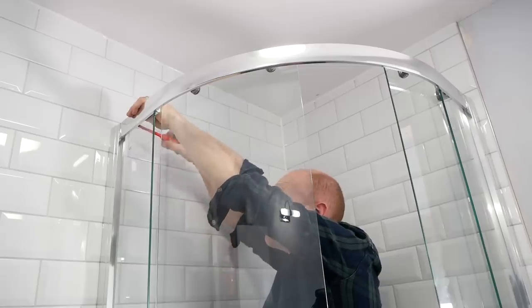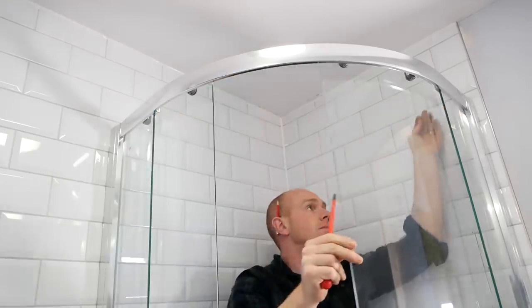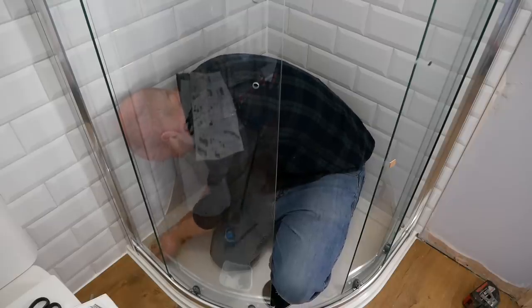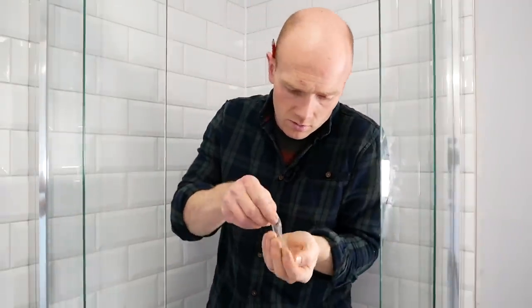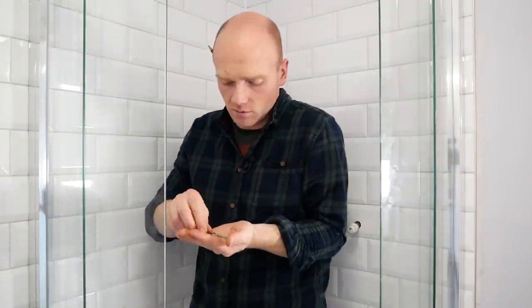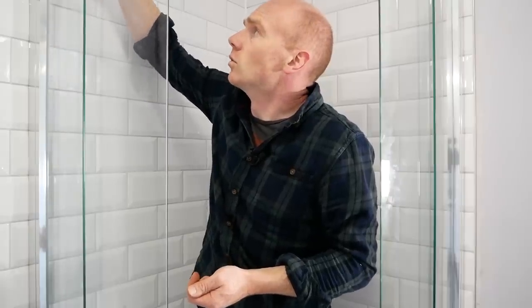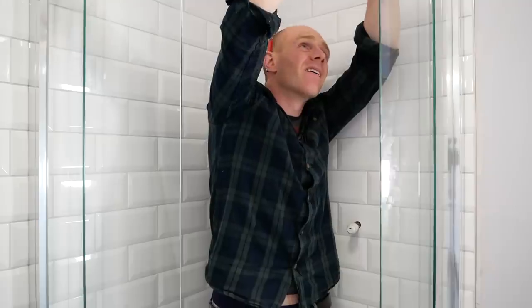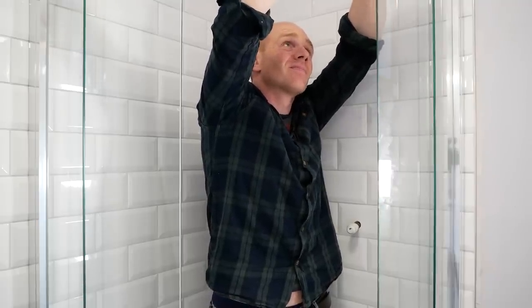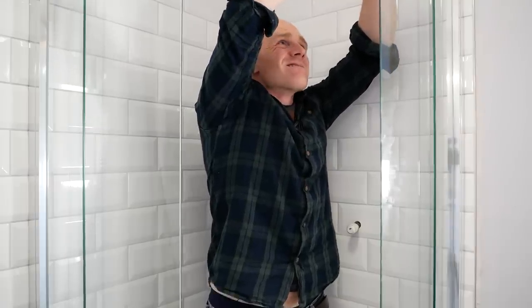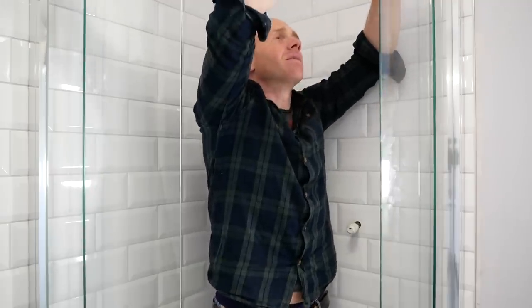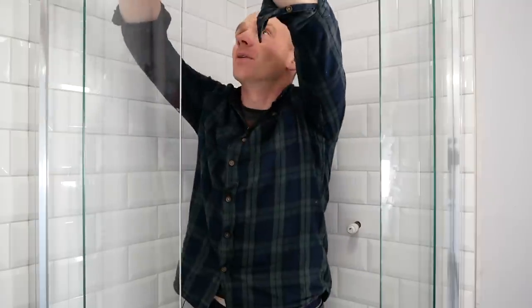Fit the bump stops to the top and bottom tracks. Alright, next job. Plastic caps to cover the screws in the runners of rollers. Come on. Get in. Of all the things that we're struggling with, putting plastic cap on. Why are they so tight? Do I take the doors out?